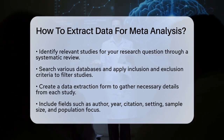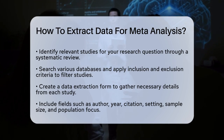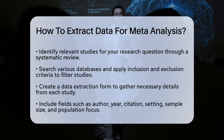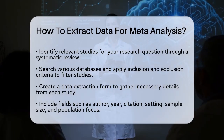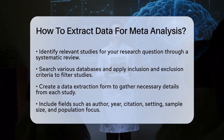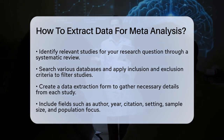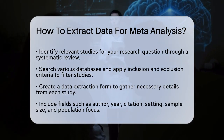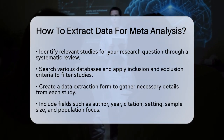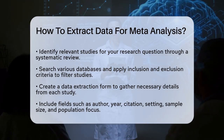First, you need to identify the studies that are relevant to your research question. This is usually done through a systematic review, where you search various databases and filter out studies based on your inclusion and exclusion criteria.